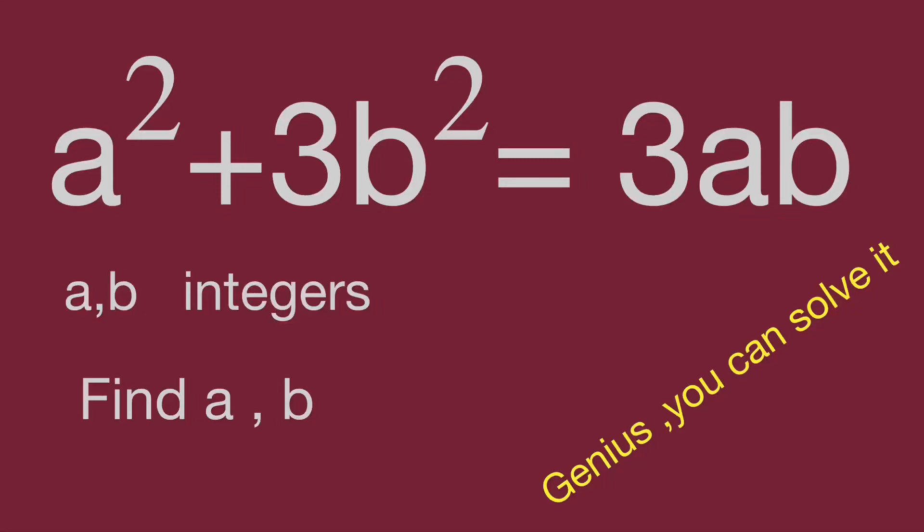Hello, you are watching Balahippo Math Genius Riddle. We have a² + 3b² = 3ab and a, b are integers. Find the value for a and b.